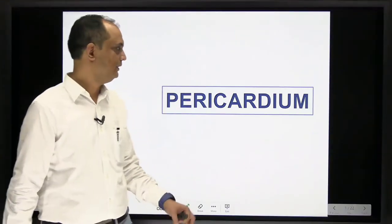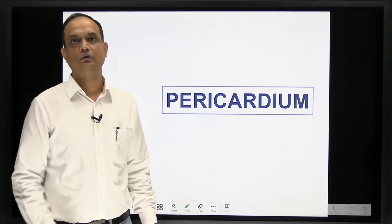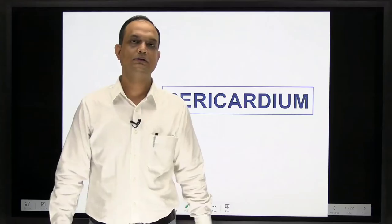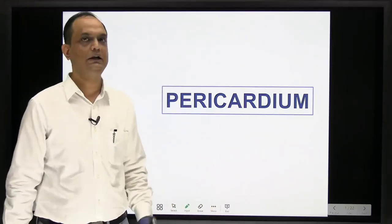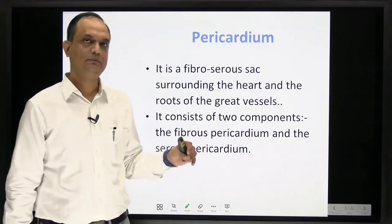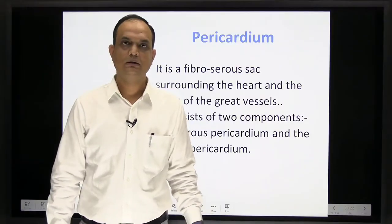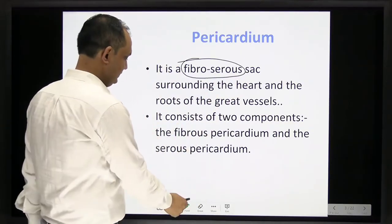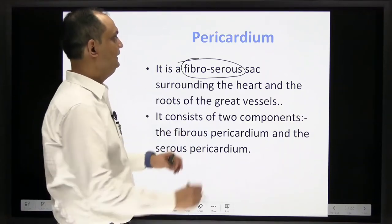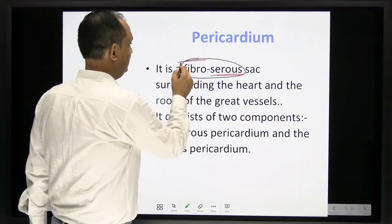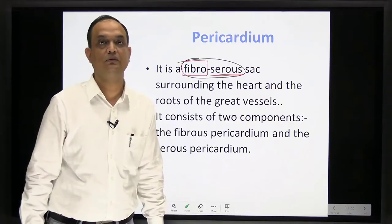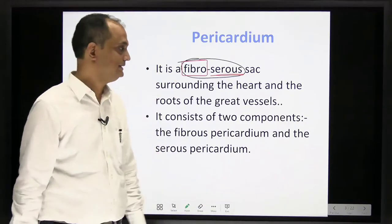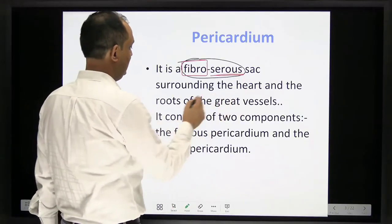Hello students, today we will discuss the pericardium. The pericardium is the outer covering of the heart, just like the pleura is the outer covering of the lung. There is a difference: the pericardium is a fibroserous sac, whereas the pleura is purely a serous sac. The pericardium surrounds the heart and the roots of the great vessels.